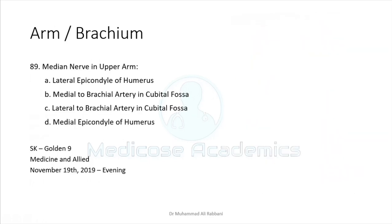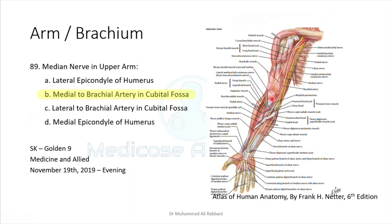Regarding the median nerve in the upper arm: it is medial to the brachial artery in the cubital fossa — this is the correct statement. It is not related to the lateral or medial epicondyle. You should remember the relations of structures at the cubital fossa using MBBR: Median nerve, Brachial artery, Biceps tendon, Radial nerve. These relations are frequently asked.